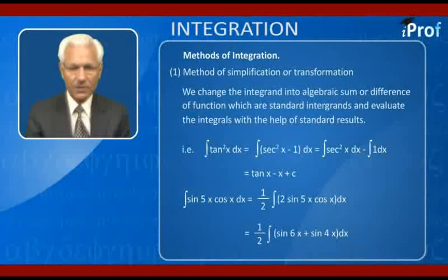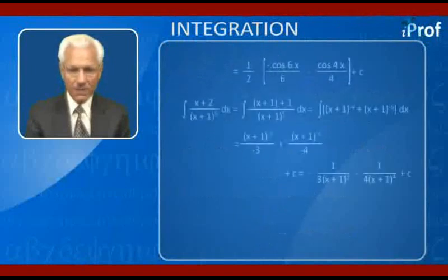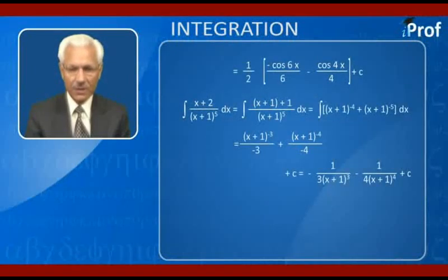Similarly, for example, we have to integrate sin 5x cos x dx. We can easily express this as sum of two functions. That is, 1/2 into 2 sin 5x cos x dx, which is 1/2 of sin 6x plus sin 4x dx. The integral will become 1/2, sine 6x will be minus cos 6x upon 6, and integral of sine 4x will be minus cos 4x divided by 4 plus c.